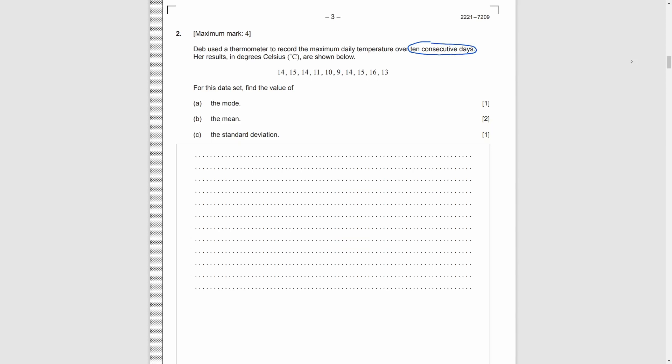In question 2, we have 10 data. Part A, we need to find the mode. So we check which number appears most often. It's 14. Part B, we need to calculate the mean. It is equal to the sum of all the data, divided by the amount of data. Also, we can just input all the data to the calculator.